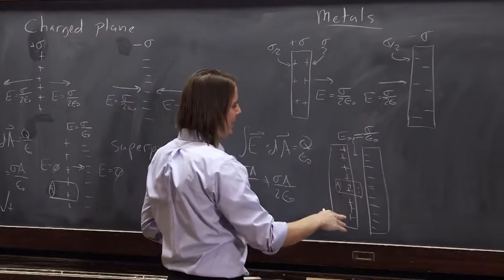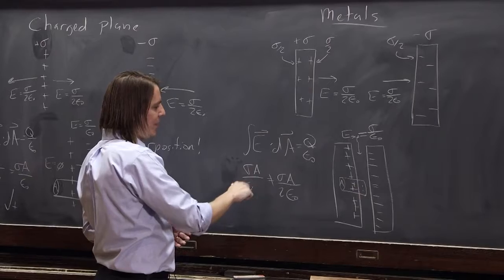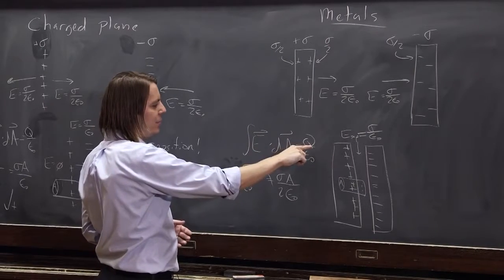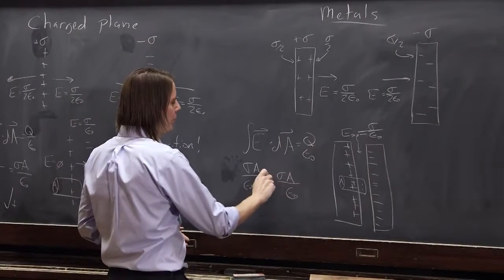E in the gap is sigma over epsilon naught, and now Gauss's law is going to work. It's still sigma A over epsilon naught for the integral, but now we have our charge all on the surface so that two goes away. So it works again. Woo-hoo.